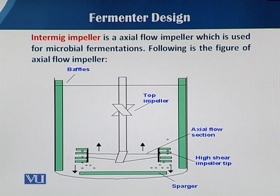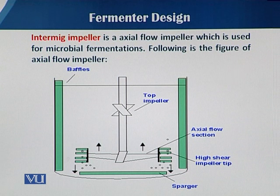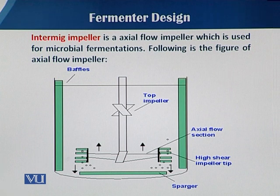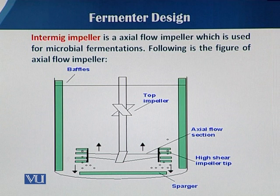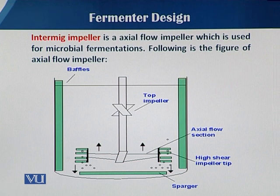When there is maximum shear in radial flow impellers, there is a problem. In axial flow, when there is less shear and we want maximum mixing of air into the liquid medium, there is another kind of impeller — the intermig impeller, which is actually a type of axial flow impeller.